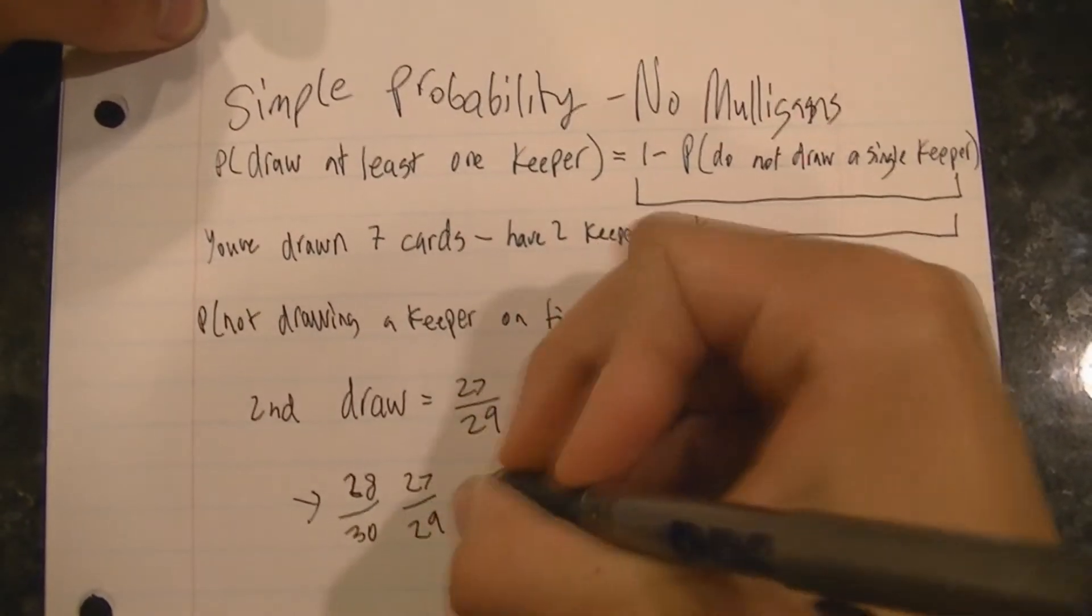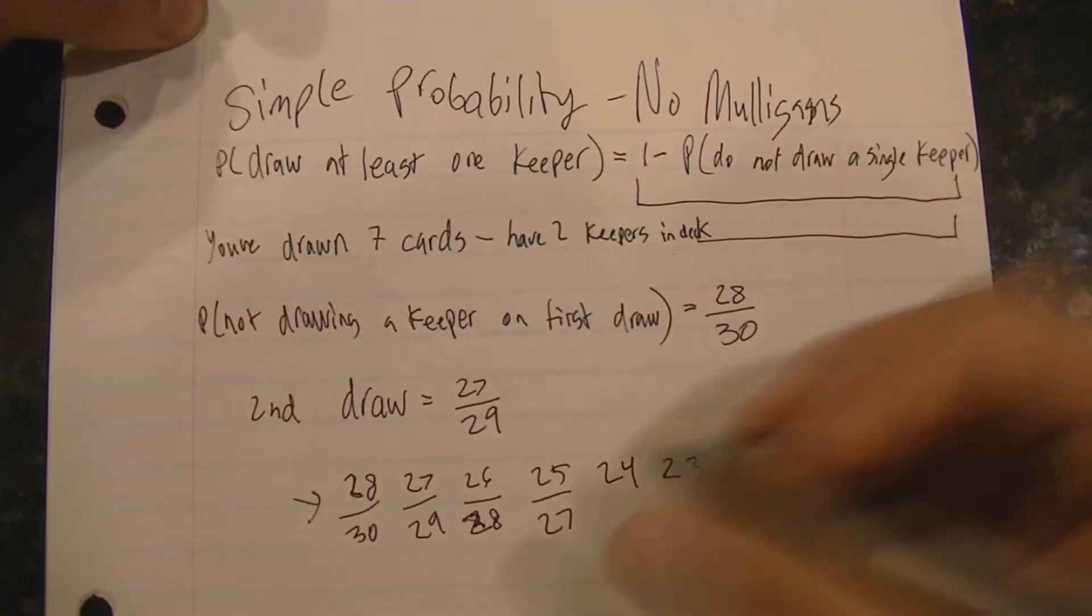Now you can continue calculating the probabilities of not drawing a Keeper all the way up until the seventh draw.